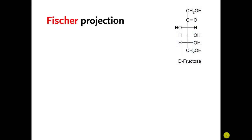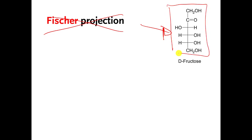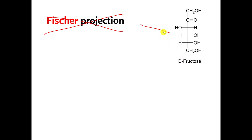There's a lot on this slide that I do not want you to know. I don't care about Fischer projections. This is a monosaccharide called D-fructose. The way that this molecule is drawn, the carbons are kind of at these intersections, arranged in a straight line up and down. This is called a Fischer projection, but I don't really care that you know this.